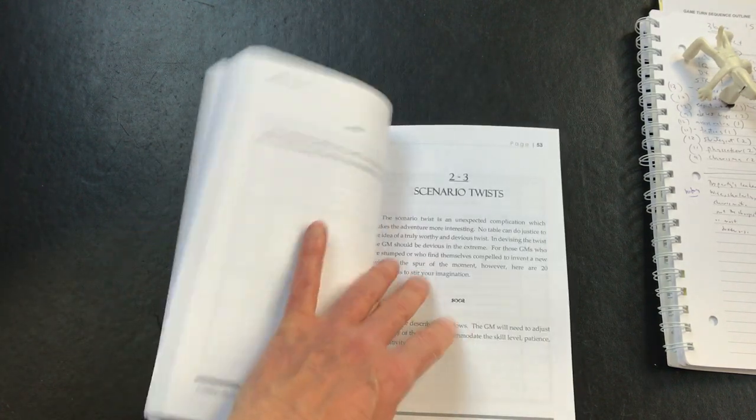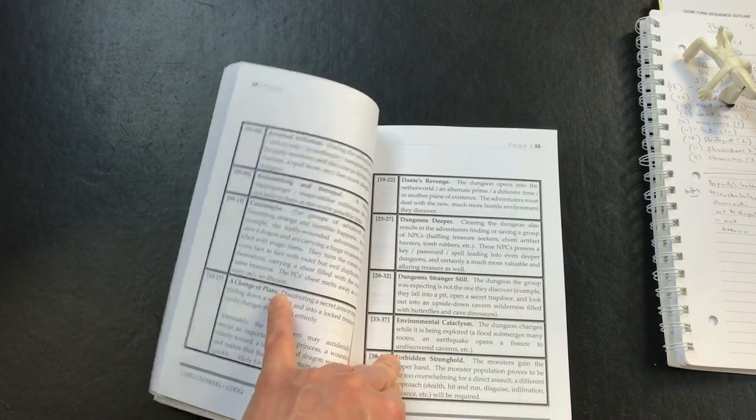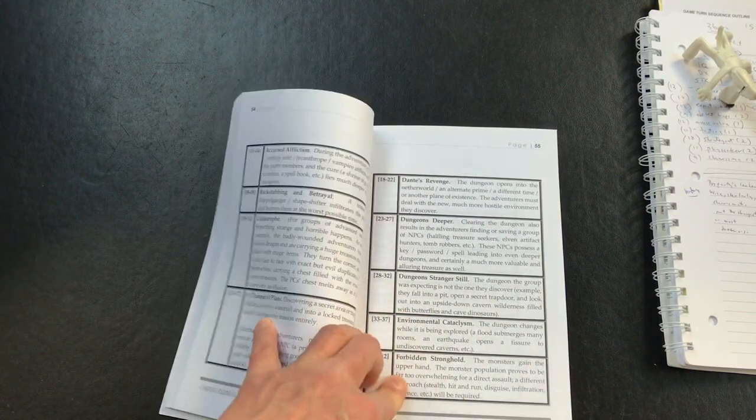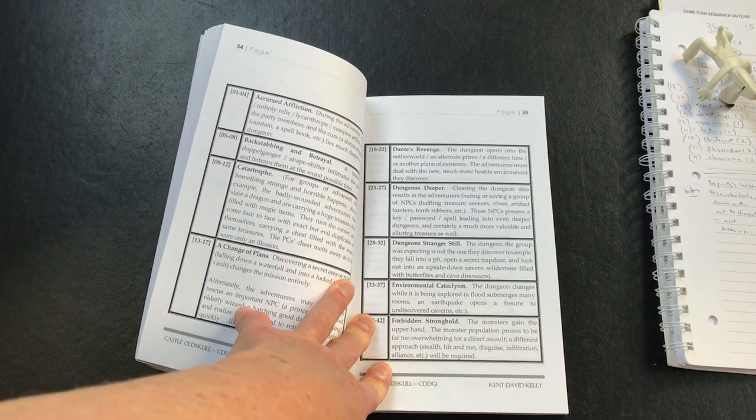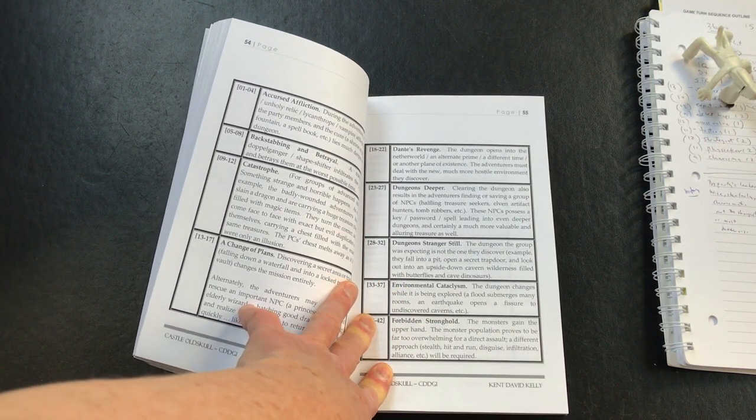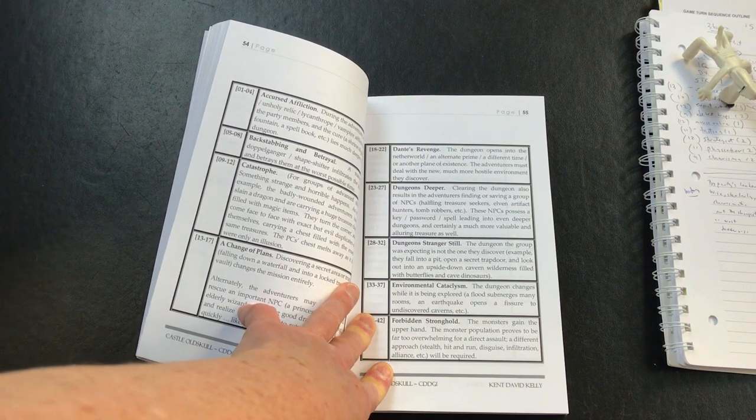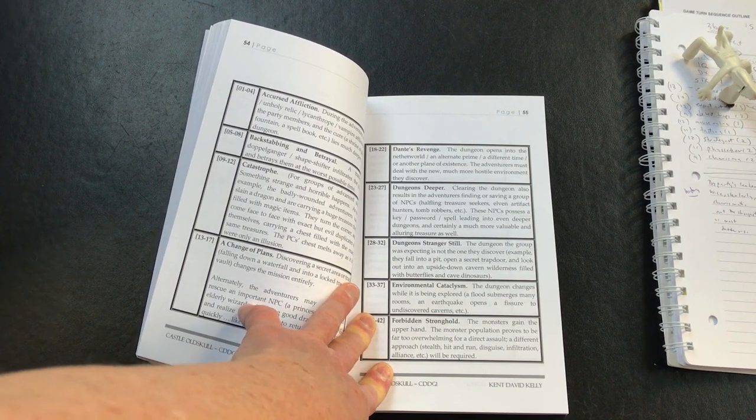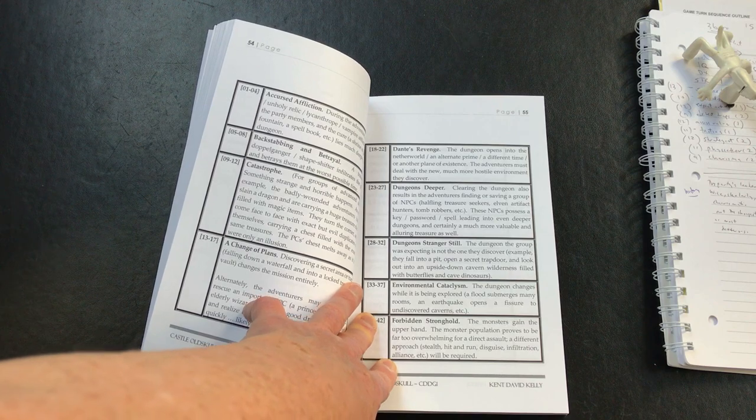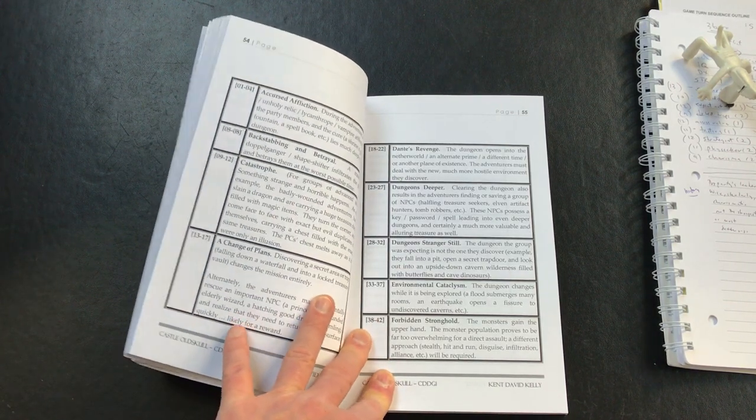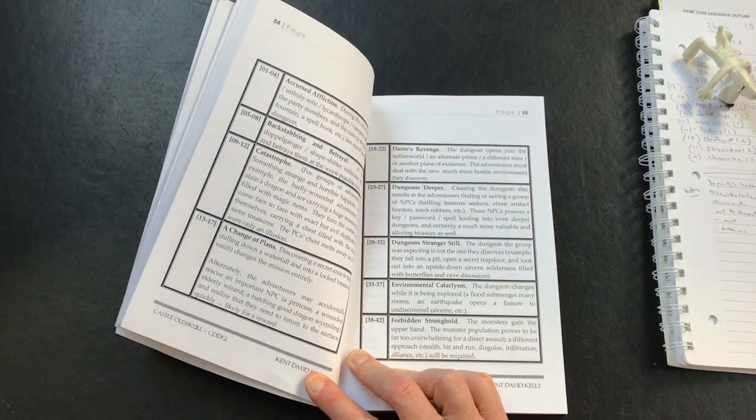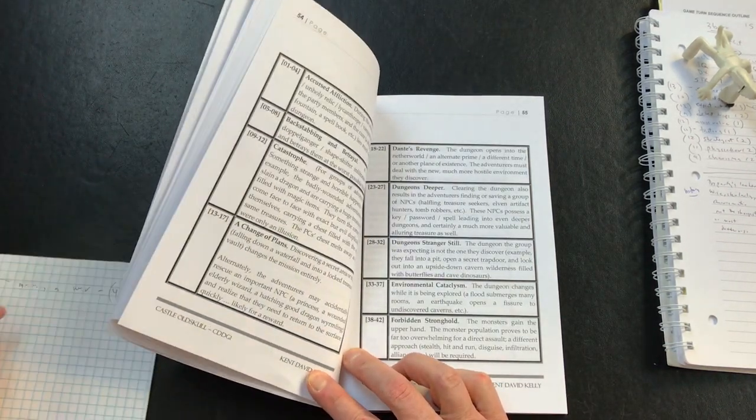42 - here we go. Forbidden stronghold. The monsters gain the upper hand. The monster population proves to be far too overwhelming for a direct assault. A different approach - stealth, hit-and-run, disguise, infiltration - will be required. That's useful.